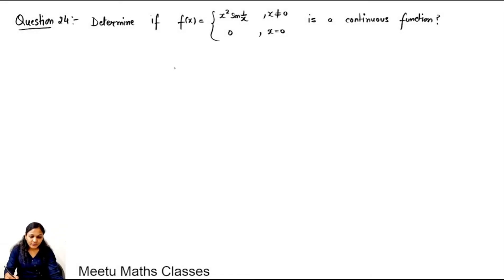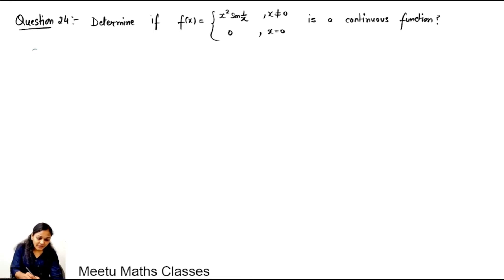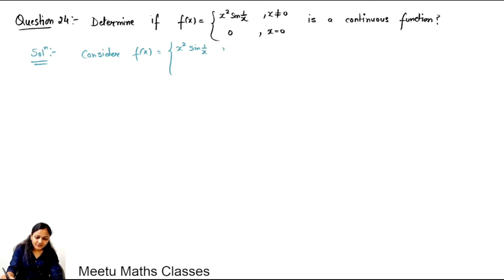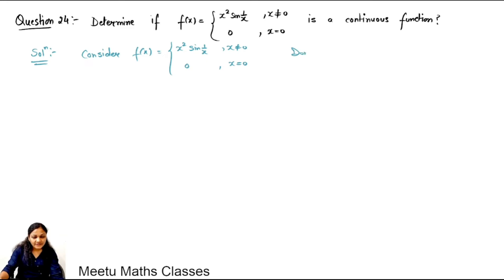Question number 24: determine if f(x) defined as x squared times sin(1/x) when x is not equal to 0, and 0 when x equals 0, is a continuous function. We check this function for continuity. The function is f(x) equals x squared times sin(1/x) when x is not equal to 0, and f(x) equals 0 when x equals 0.